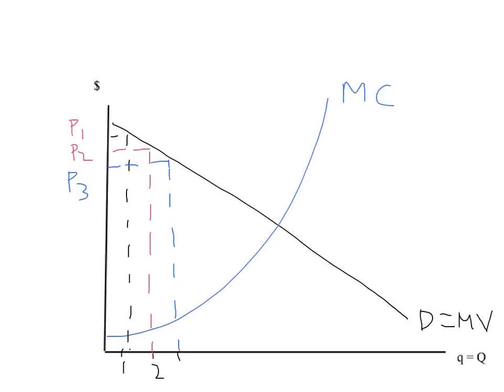So every time the monopoly sells another unit, its marginal revenue is simply given by the height of the demand curve. For every Q, the demand curve simply tells us the extra revenue the monopoly gets when it sells another unit.